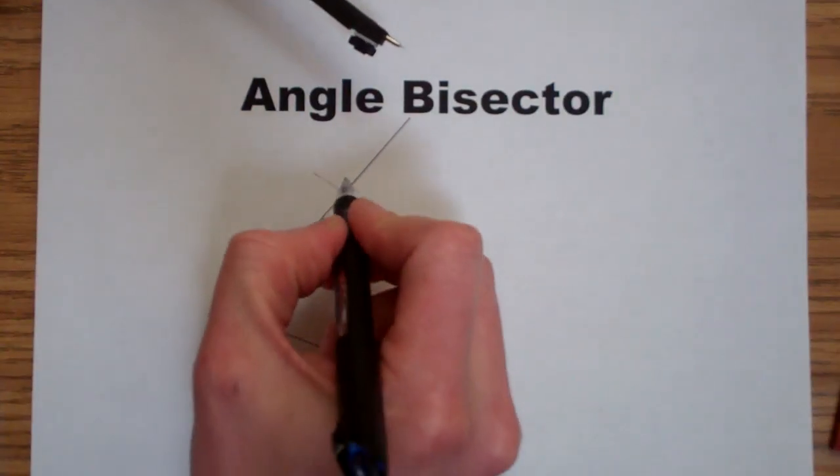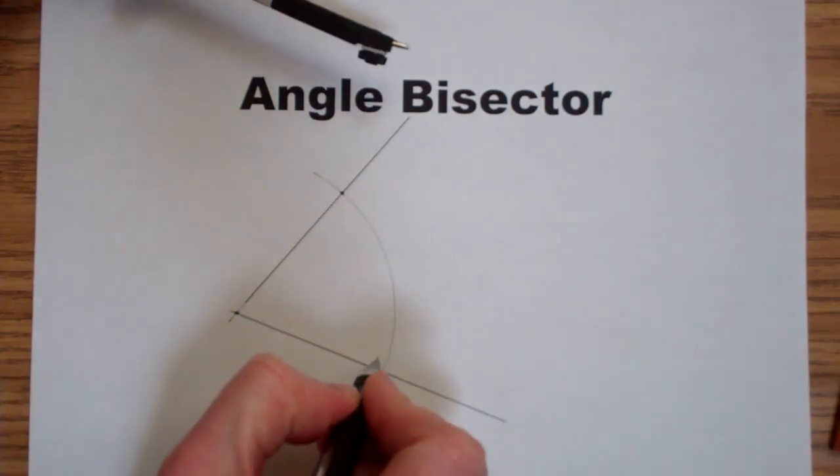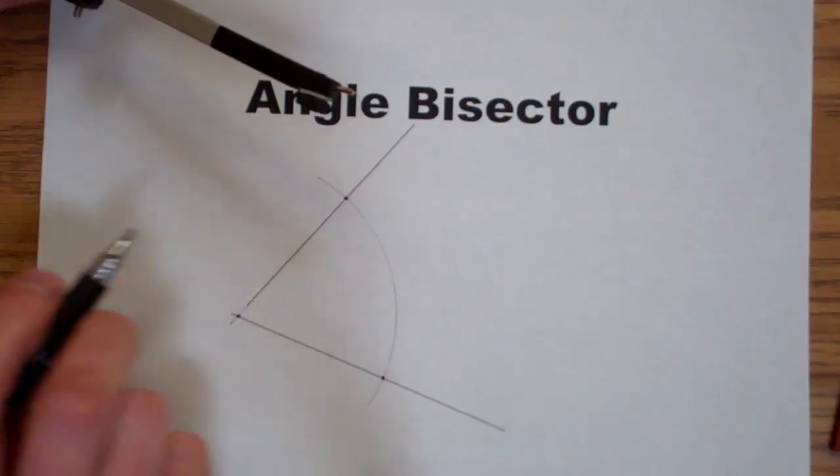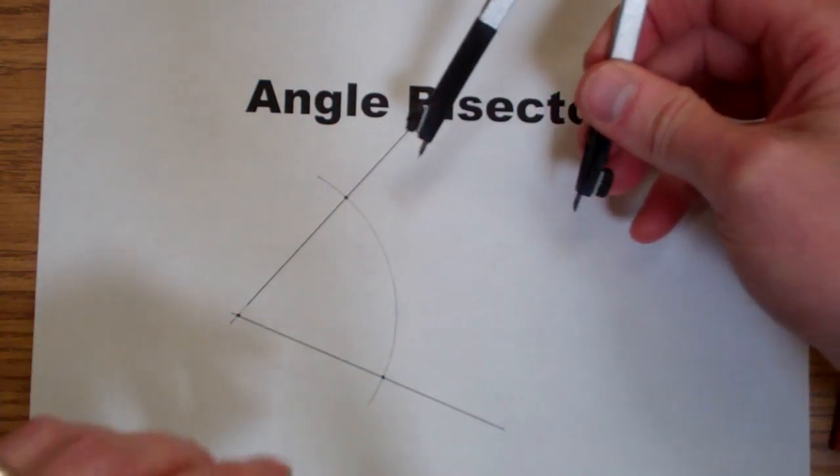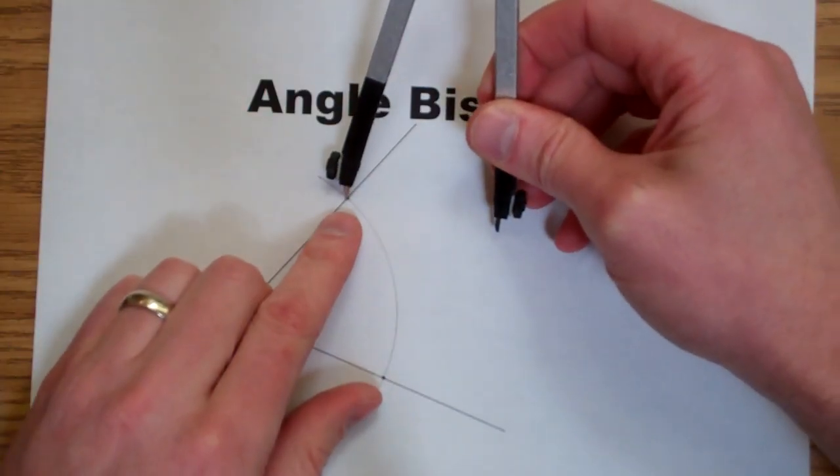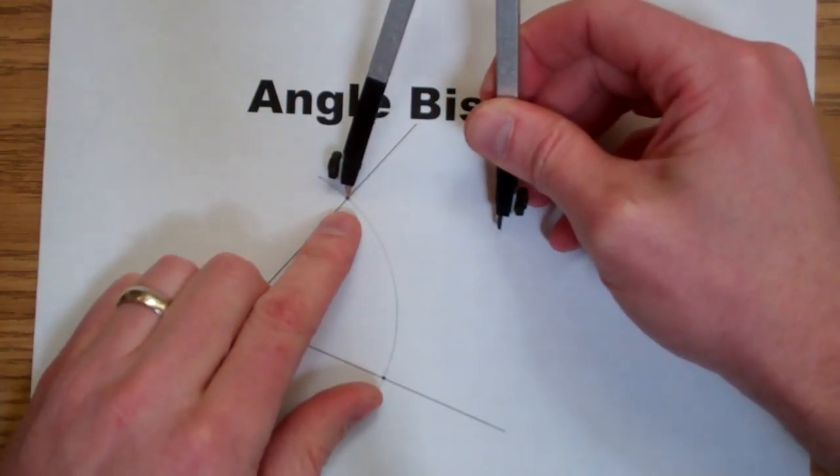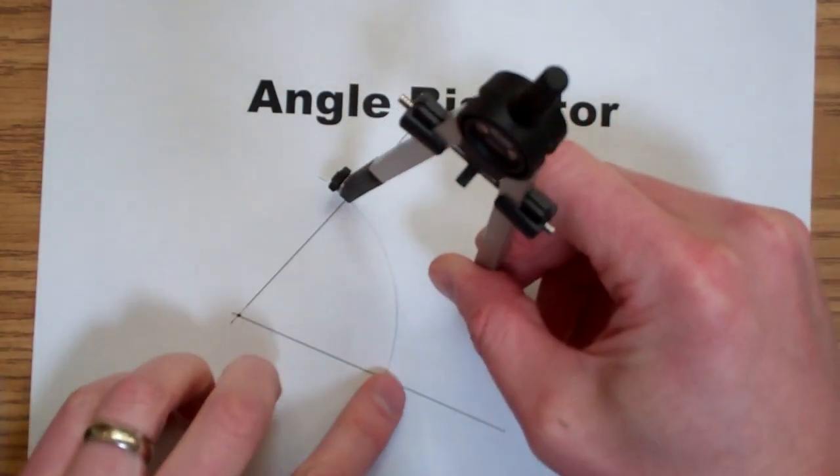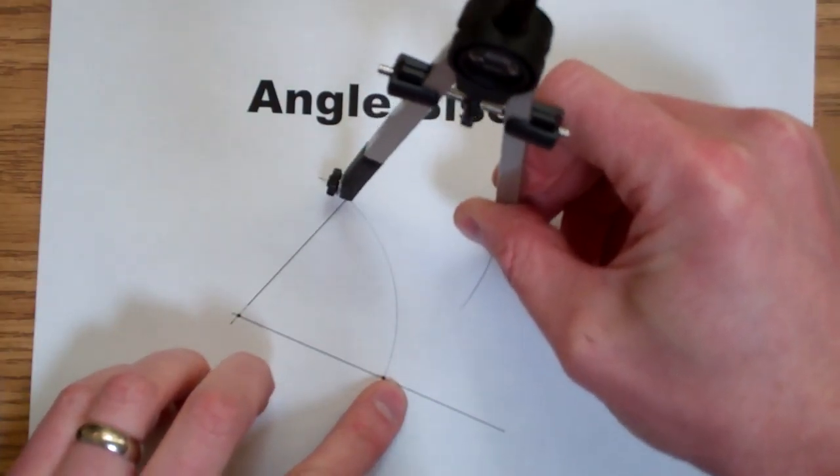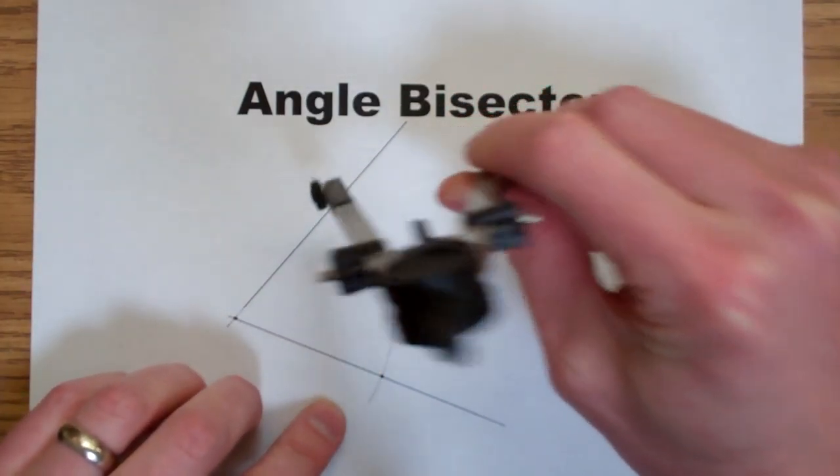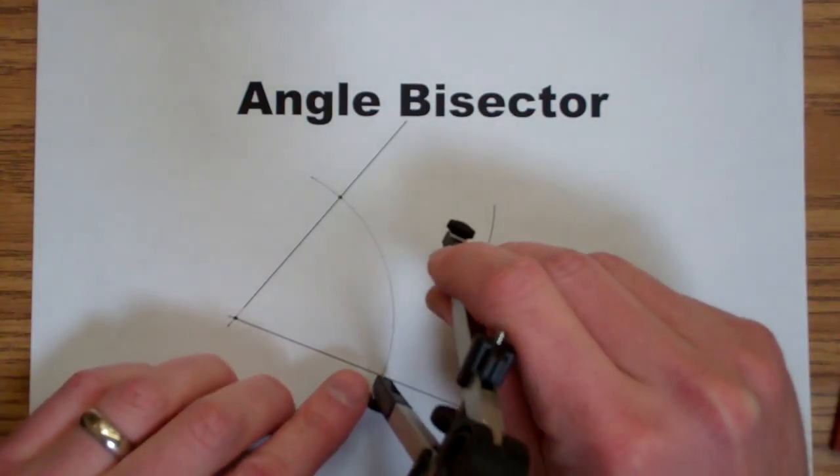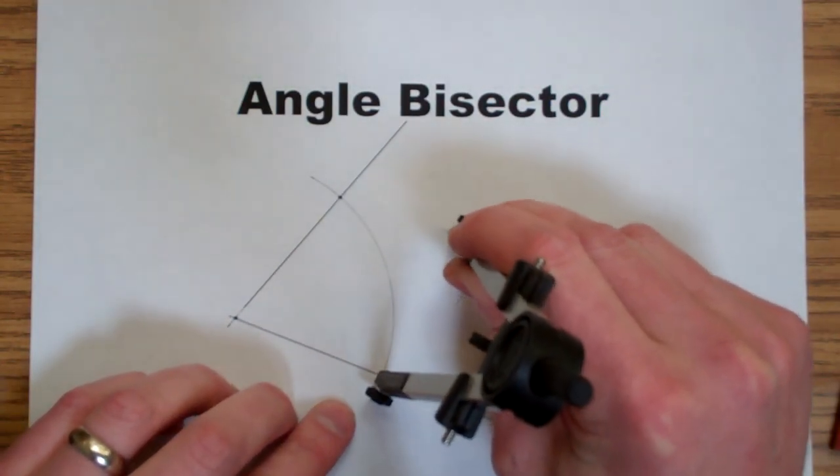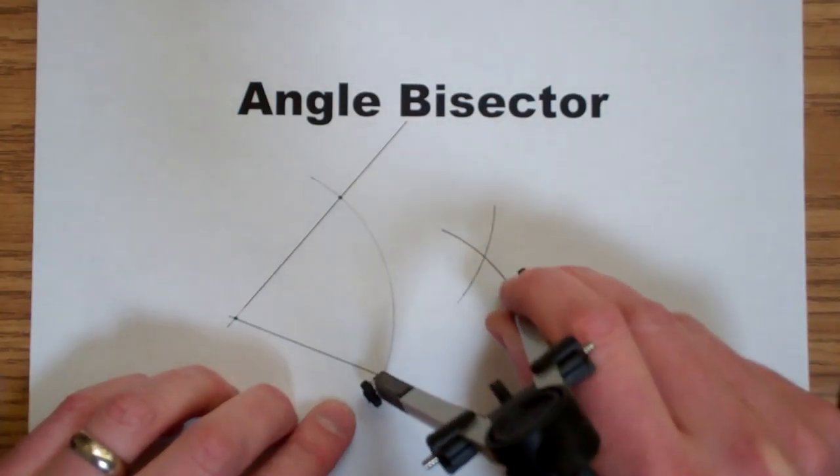Now we've created two new intersections here and here. And from those intersections we're going to take our pointer, stab in, and draw arcs in the middle of the angle. One here and one from the other side so that those arcs intersect.